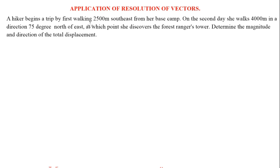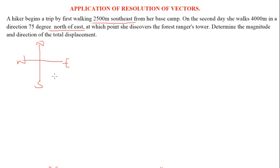A hiker begins a trip by first walking 2500 meters southeast. Let's identify the cardinal points: east, south, north, and west. Southeast indicates the hiker travels within the southeast region. Since no specific degree is given, we assume it is 45 degrees — right at the middle — since the total angle in this region is 90 degrees.